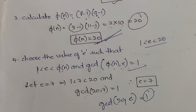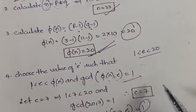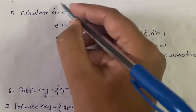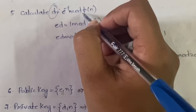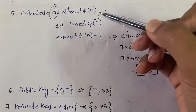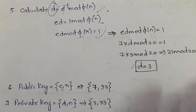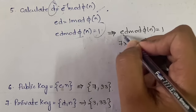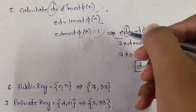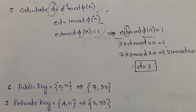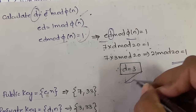So far we have the values of p, q, n, φ(n), and e. Now we calculate d. The formula is d = e⁻¹ mod φ(n), which simplifies to ed mod φ(n) = 1. We already know e = 7 and φ(n) = 20, so we need 7d mod 20 = 1. Testing: 7×1 mod 20 = 7, not 1. 7×2 mod 20 = 14, not 1. 7×3 = 21, and 21 mod 20 = 1. So d = 3.